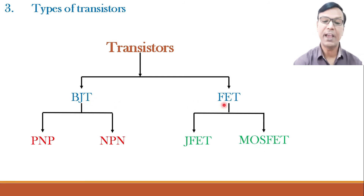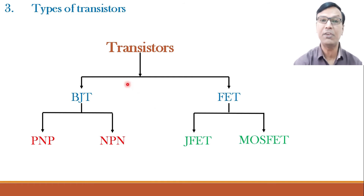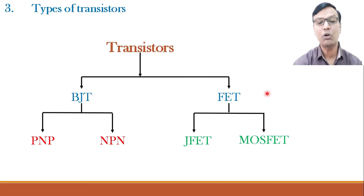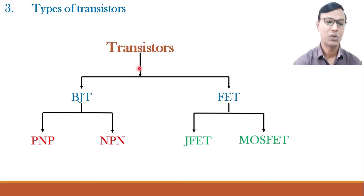These BJTs and FETs are three terminal devices. Why are these three terminal devices important? Because using this three terminal device there is a middle terminal which can be used to control the current between the input terminal and the output terminal. Or you can say, you can use the middle terminal to control the voltage between the input terminal and the output terminal. So these are the different types of transistors.